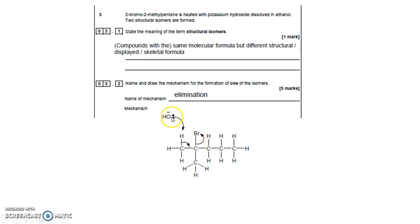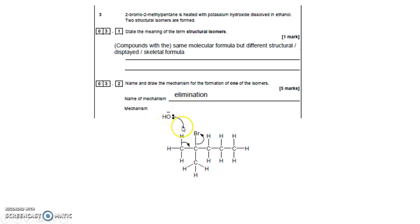The curly arrow comes from the lone pair on the O of the OH⁻, and that attacks an H. Which H does it attack? You go from the CBr carbon along to a neighbouring carbon, and it's an H from the carbon bonded to the CBr. So the neighbouring C to the CBr has an H, and that's the H it goes for. Now, 2-bromo-2-methylpentane doesn't know left from right, so the OH⁻ could go the other way to a neighbouring carbon on the other side and attack that H instead — which is why two structural isomers are formed. The OH⁻ lone pair can go for the H on either neighbouring carbon next to the CBr.